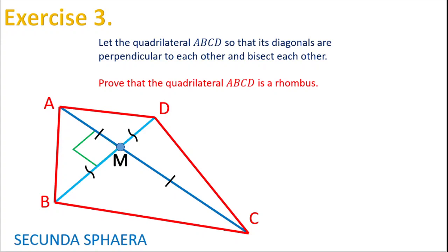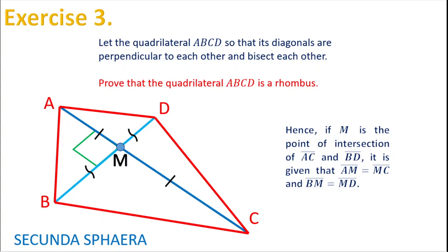We are asked to prove that the quadrilateral ABCD is a rhombus. Remember, this means we need to prove that each of the sides of this quadrilateral are equal among them.